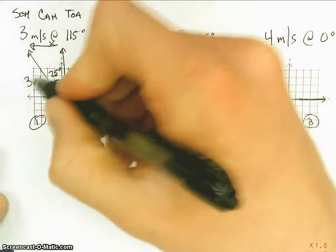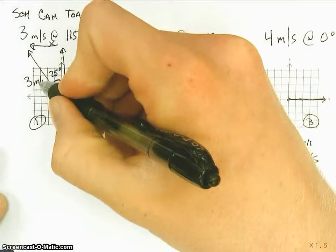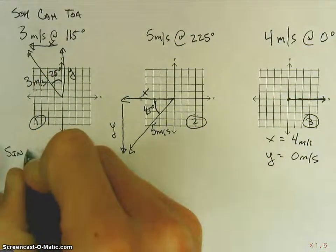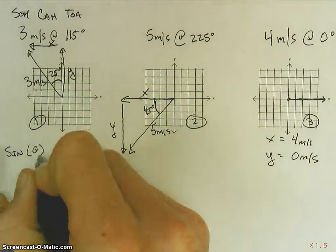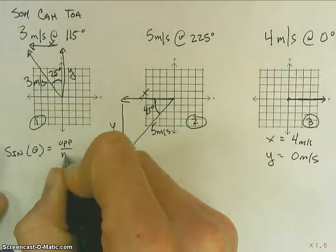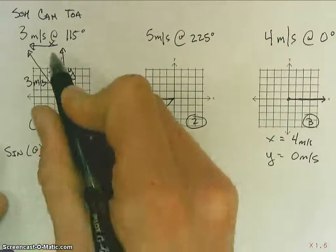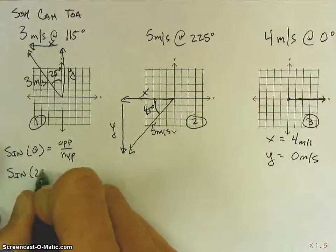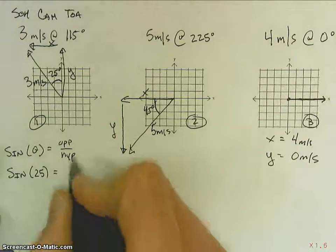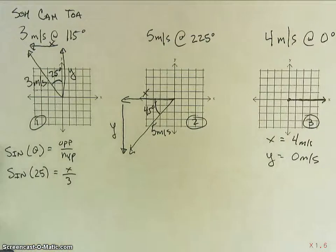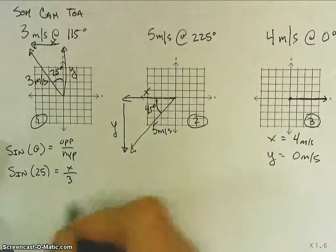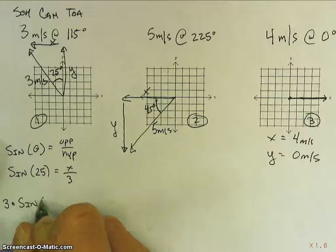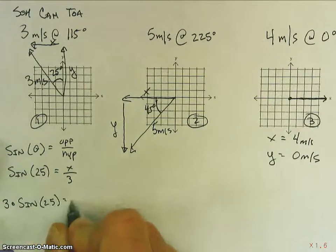25 degrees, 3 meters per second is my hypotenuse. So, if I'm looking for x, I have opposite hypotenuse, so I'm going to use the sine function of my angle is going to be equal to my opposite over my hypotenuse. So, opposite is x, hypotenuse is 3. Sine of 25 is going to be equal to my opposite x divided by my hypotenuse, 3. So, using algebra, I end up with 3 times sine of 25.